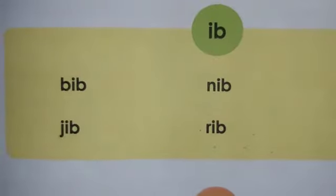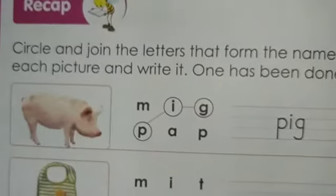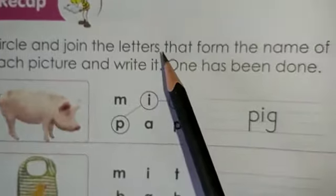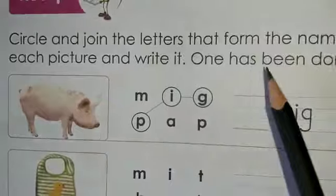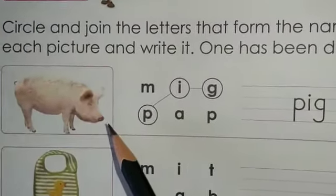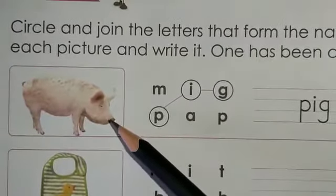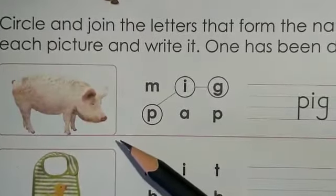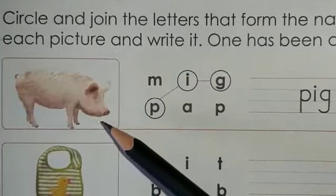Now please turn over to page number four. On page number four you have a very interesting exercise. Let's read — what is it about? Circle and join the letters that form the name of each picture and write it. One has been done. How you have to do it — please see very clearly. This is a picture. Firstly identify the picture. What is this? This is a pig.